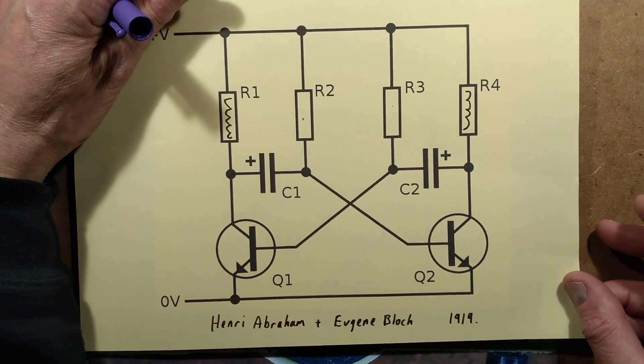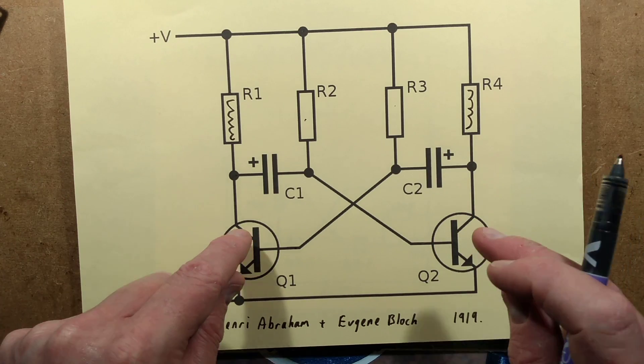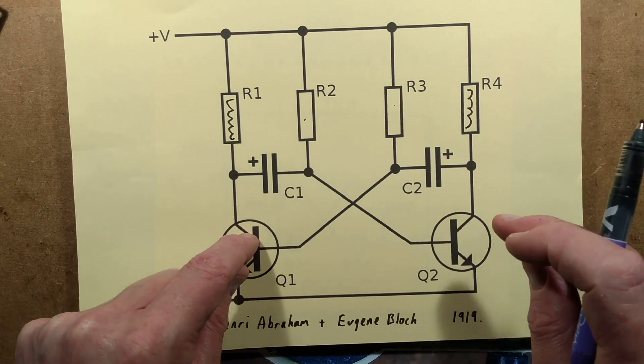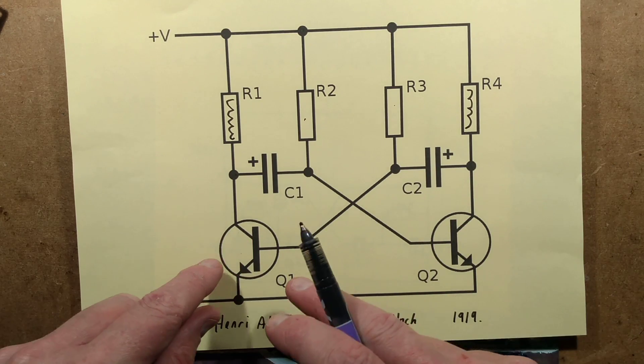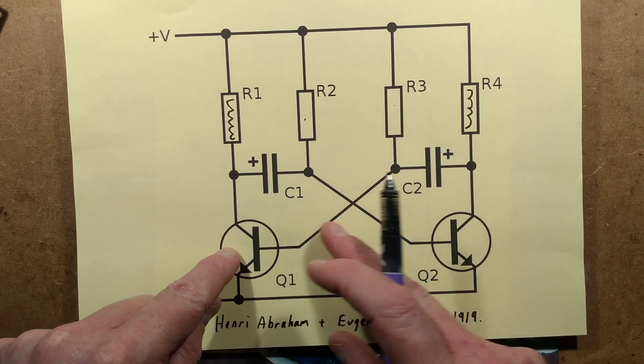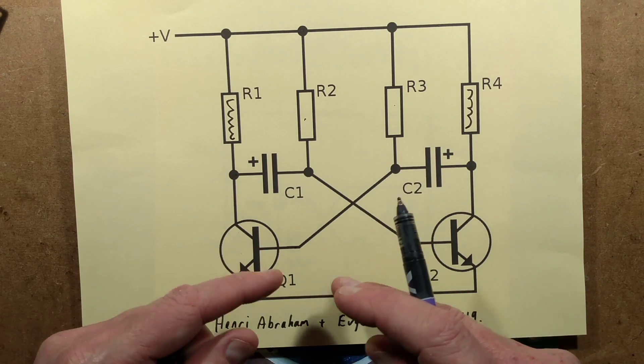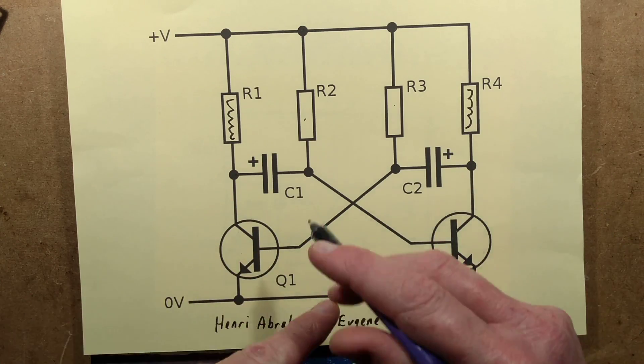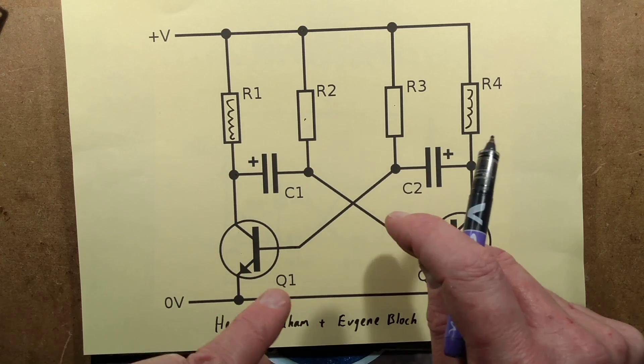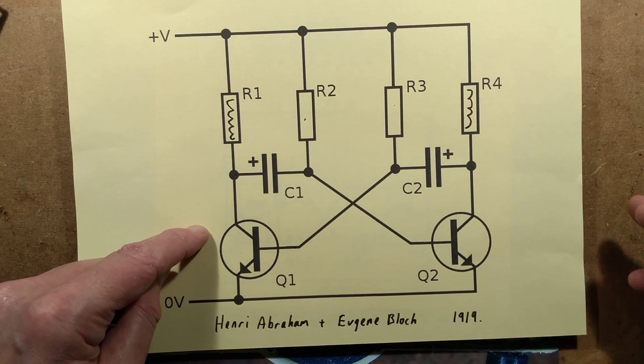It's called the astable multivibrator because it's not stable in either state. It always toggles backwards and forwards. You get a monostable multivibrator, which is stable in one state but when triggered goes to the other state but can't stay there. And you get the bistable multivibrator, which is stable in both states, but you switch between the two. This is the astable multivibrator.